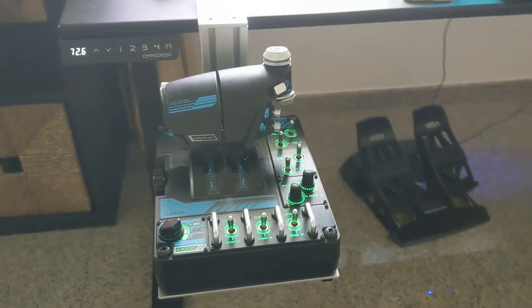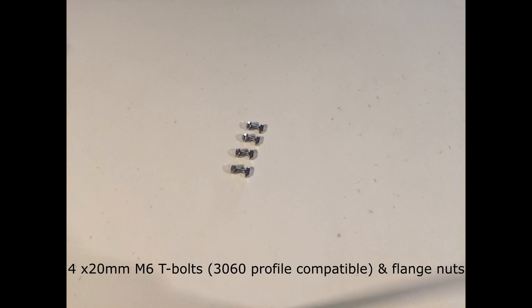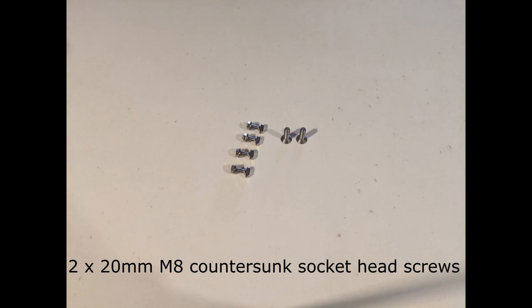Now let's take a quick look over the parts that we're going to need. First off, we have 20mm M6 T-bolts with matching flange nuts. A pair of 20mm M8 countersink socket head screws. These will hold our top plate in place.